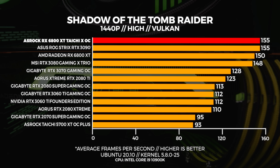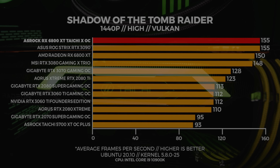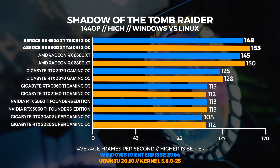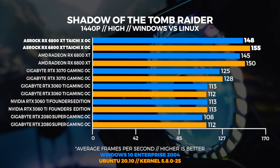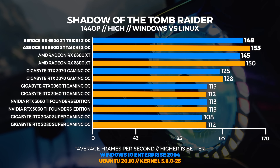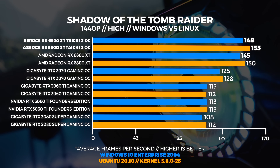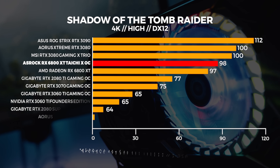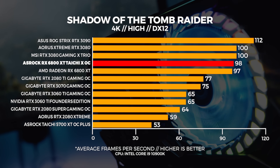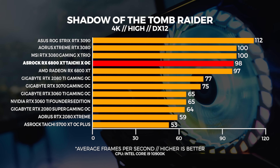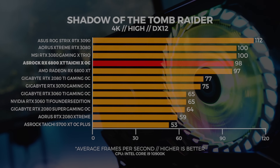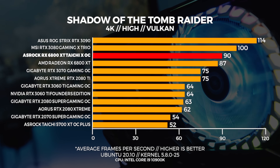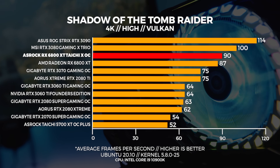There are some things that have changed under the hood with the kernel, but we're going to talk about that a little bit later. Comparing Windows to Linux, Linux is again outperforming Windows, and that just makes me really happy to say. At 4K, we're seeing performance start to drop behind the 3090 and the 3080, but only by a tiny margin. In Linux at 4K, we're seeing the same thing echoed, with the Taichi X coming in slightly behind the 3080s.